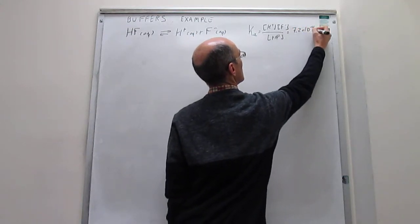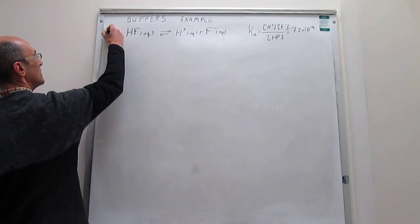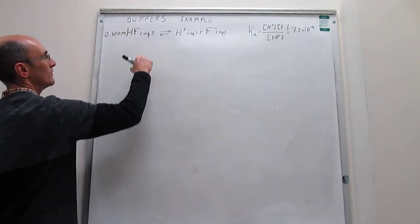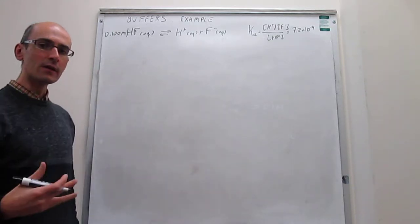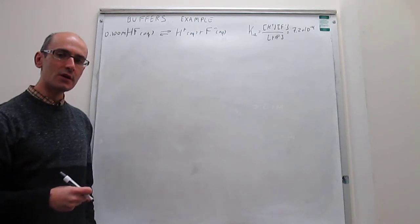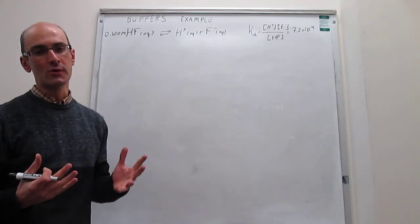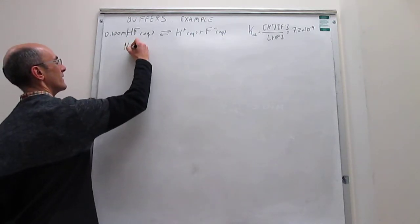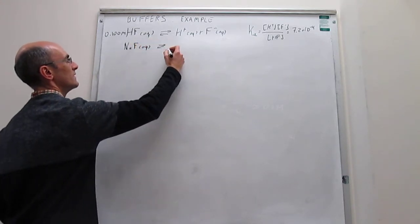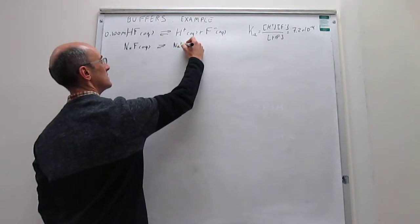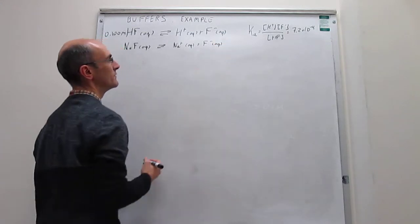So clearly a weak acid. We're going to mix 0.1 molar of this hydrofluoric acid solution with an equally large concentration of a salt of the conjugate base. The conjugate base is fluoride, so we're going to use sodium fluoride as the salt of that conjugate base. That gives us Na⁺(aq) and F⁻(aq) — that is your buffer solution.